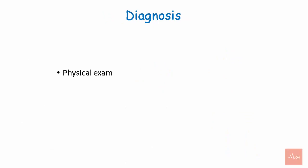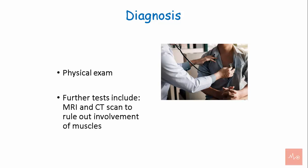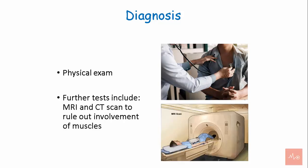A physical exam is carried out by your physician, and he will take your medical history to find out about the symptoms and potential exposure to infection or trauma. The physician will also look out for signs of shock. If gangrene is suspected, further diagnostic tests like MRI and CT scan are done to rule out the involvement of muscles.